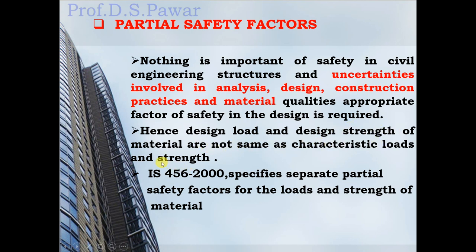For example, the characteristic strength of concrete is given as M15, M20, M25, and so on. For steel, grades include Fe 250, Fe 415, and Fe 500. IS 456-2000 specifies separate partial safety factors for loads and for the strength of materials.